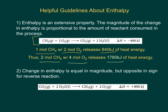The second guideline is that the change in enthalpy is equal in magnitude, but opposite in sign for the reverse reaction. For example, we have methane gas reacting with oxygen gas to produce carbon dioxide and water. But in the reverse reaction, carbon dioxide gas reacts with water to produce methane gas and oxygen gas. The change in enthalpy for the reverse reaction is a positive 890 kilojoules — it will be an endothermic process.